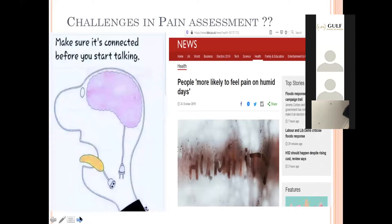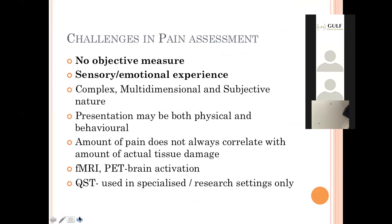The patient needs to be articulate enough to give us an idea of how and where the pain is. There are external factors beyond our control, like temperature and weather, that affect pain. There's no objective measure of pain; by nature it is a complex, multi-dimensional and subjective experience that can present in both physical and behavioral ways. Chronic pain states are usually very tricky to assess.